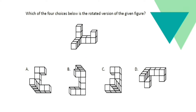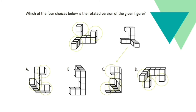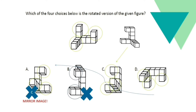Which of the four choices is the rotated version of the given figure? This is another which-figure-is-which problem, but in 3D, so it requires a little more imagination. We try to imagine what the figure looks like when rotated. When you rotate the figure 90 degrees counterclockwise, the figure is clearly identical with letter C. You might assign the number of cubes as a marker, but all choices except letter B have the same number of cubes. Letter A is a mirror image of the original, and letter D is just a rotation of letter A. So the correct answer is letter C.